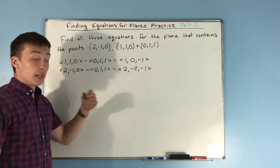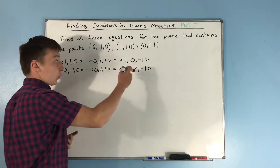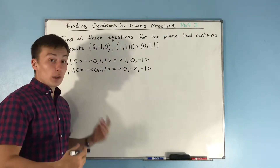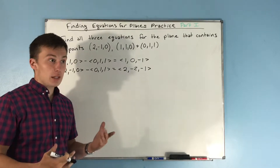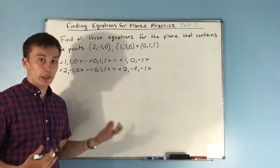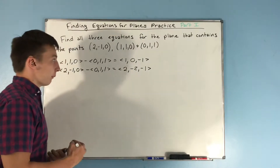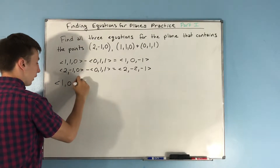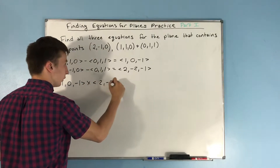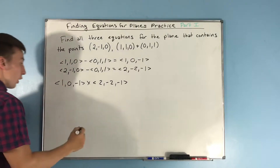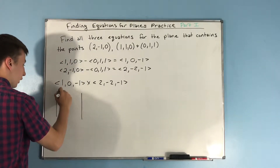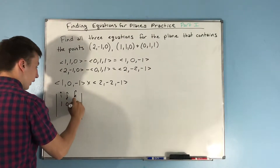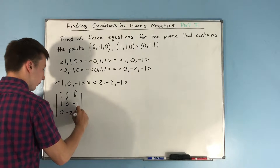Now we have two vectors on the plane. If we do (1,0,-1) cross (2,-2,-1), we find the cross product and get a vector orthogonal to the plane — that's our normal vector. We set up our 3x3 matrix with i-hat, j-hat, k-hat on top, then (1, 0, -1) and (2, -2, -1).